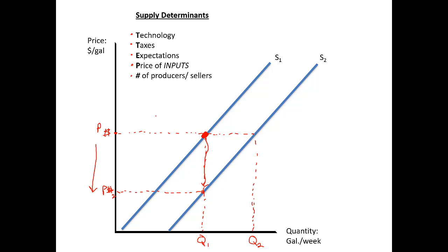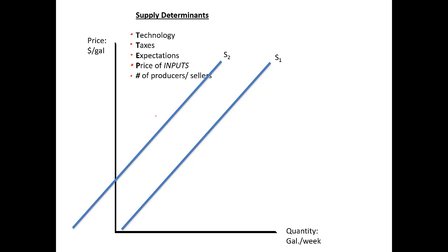Now let's do the same type of analysis if the supply curve shifts to the left. Let's say several of the companies producing this product left the market — that would cause the supply curve to shift to the left. So here's P1, the initial price that prevailed in this market, and Q1, the quantity that companies were producing. After the supply curve shifts to the left due to exit of several producers, the quantity produced goes down. If you think about it, that's obvious — if there are fewer producers, there's less production capacity in this industry, so the quantity has to go down.